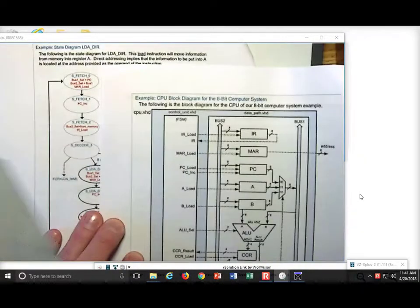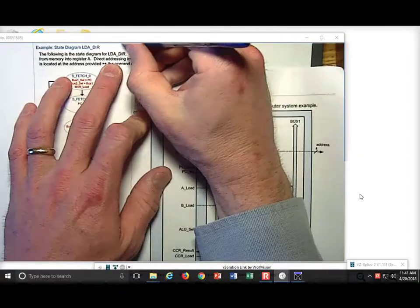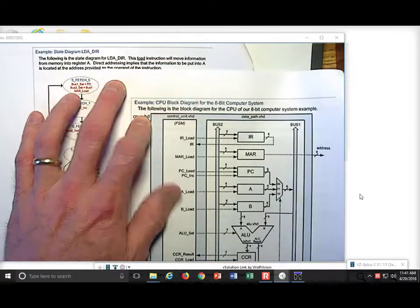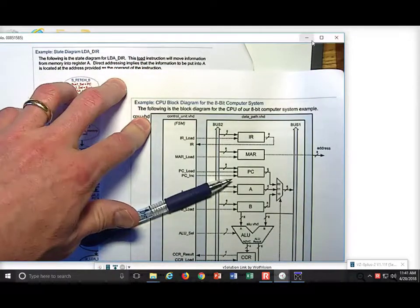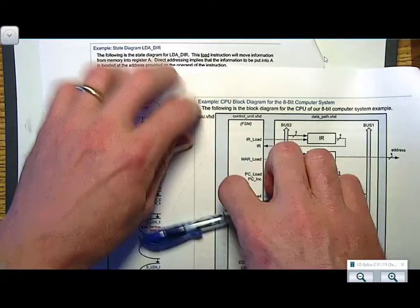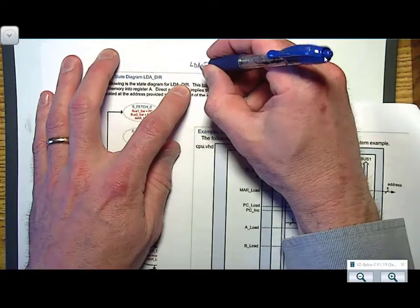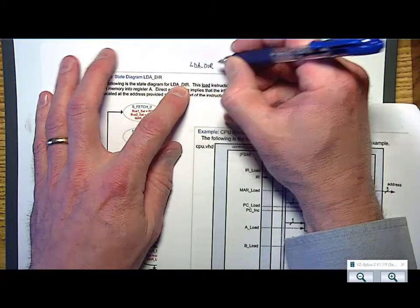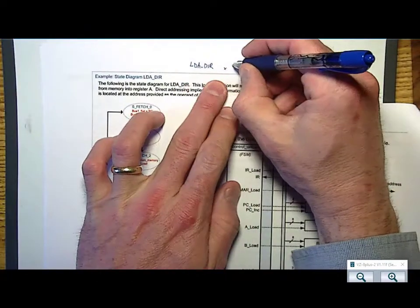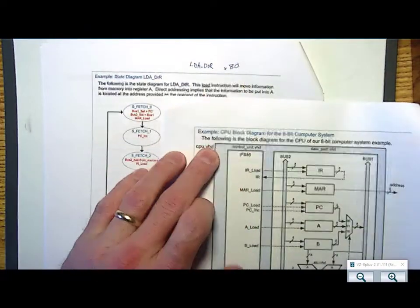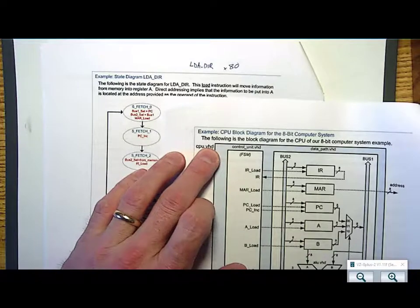So if I'm going to do an LDA with direct addressing, I need to provide it an address. Let's say for example that I give it 80. That means it's going to go out to 80 and try to get the information from that.